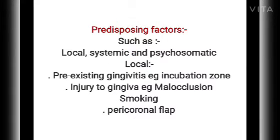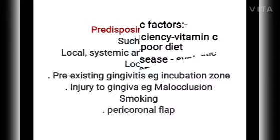The predisposing factors for ANUG include local factors, systemic factors, and psychosomatic factors. Local factors include pre-existing gingivitis, injury to the gingiva such as malocclusion, smoking, and pericoronitis.